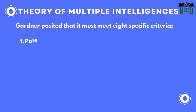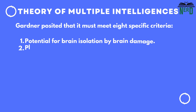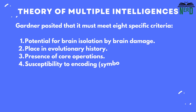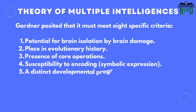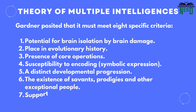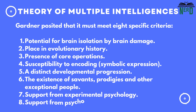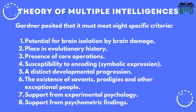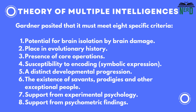For a cognitive capacity to qualify as an independent intelligence, Gardner posited that it must meet eight specific criteria: 1. Potential for brain isolation by brain damage. 2. Place in evolutionary history. 3. Presence of core operations. 4. Susceptibility to encoding, such as symbolic expression. 5. A distinct developmental progression. 6. The existence of savants, prodigies, and other exceptional people. 7. Support from experimental psychology. 8. Support from psychometric findings.